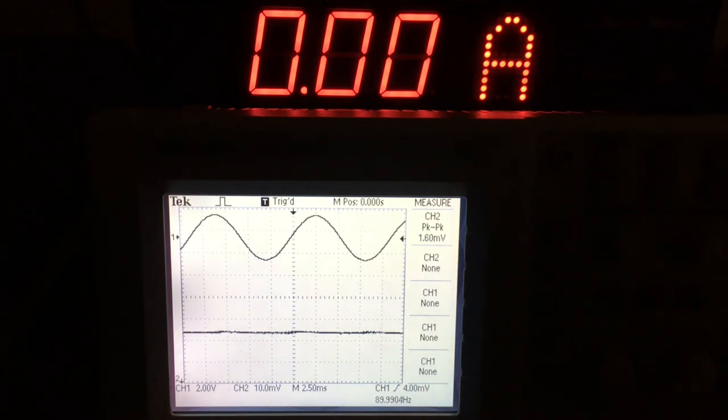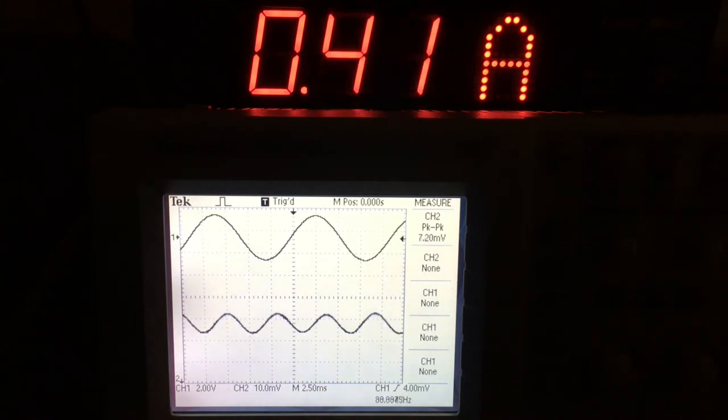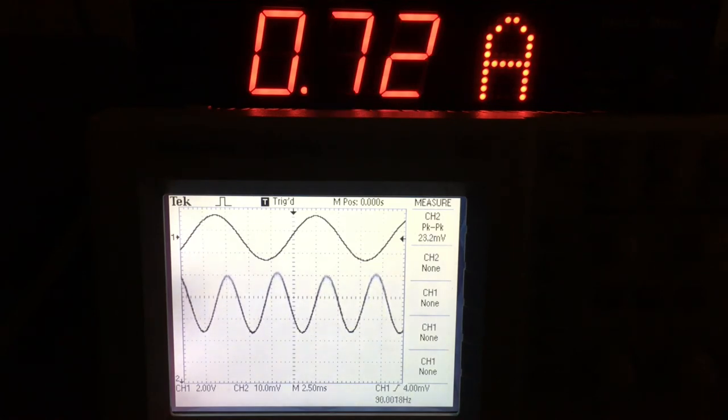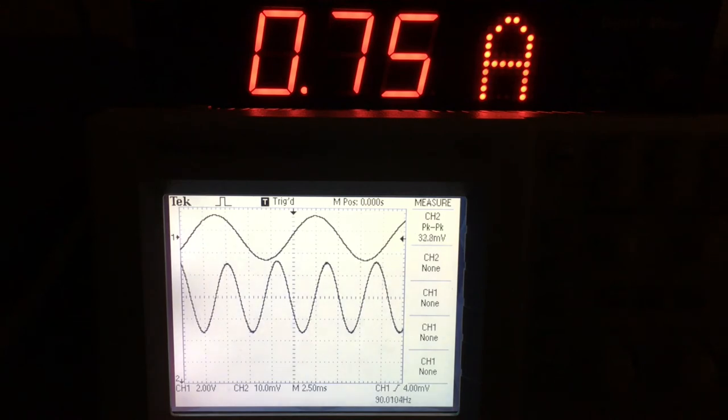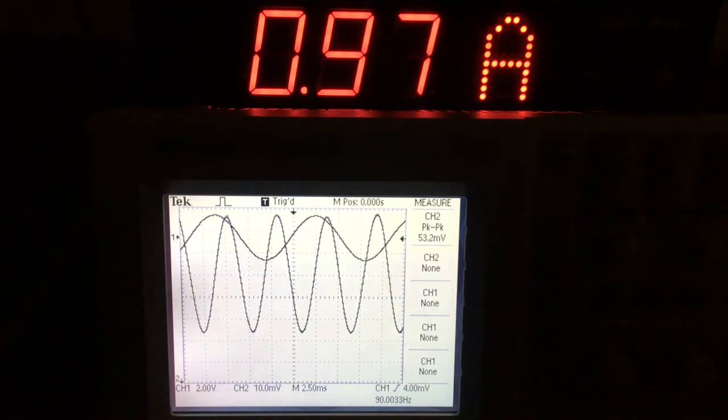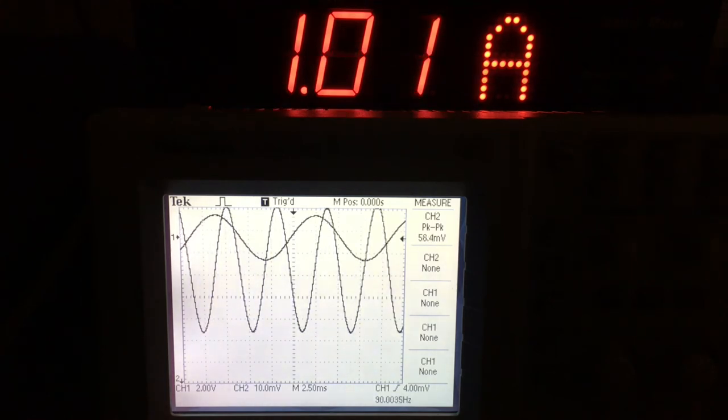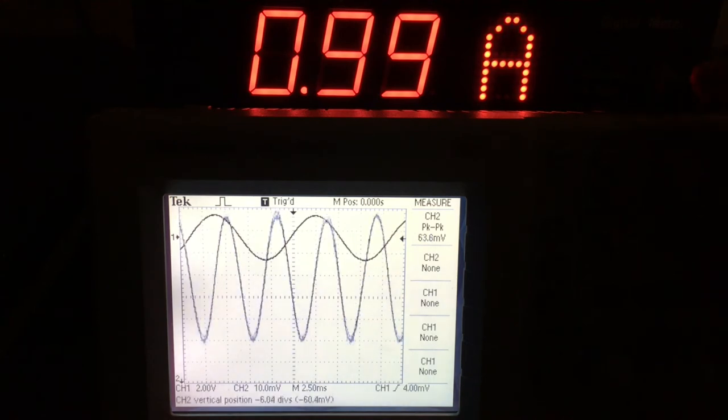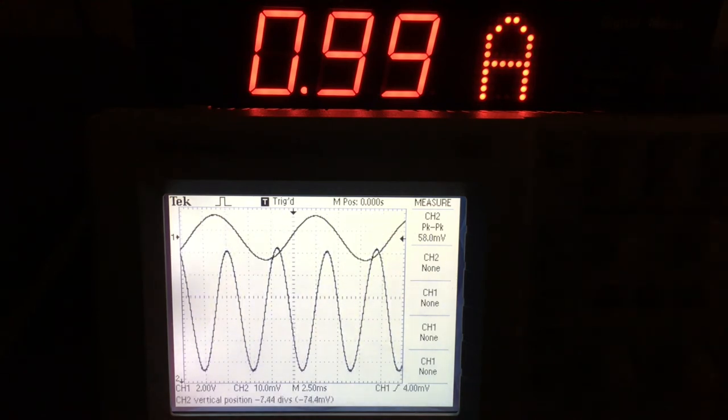So now we can take some data. I can set this, increase this up to some current. There's half an amp here, and you can read an amplitude. Three quarters of an amp here.